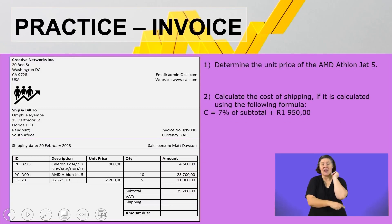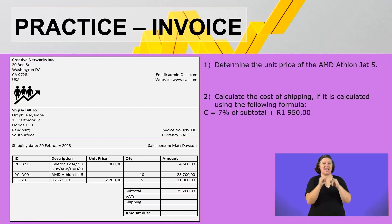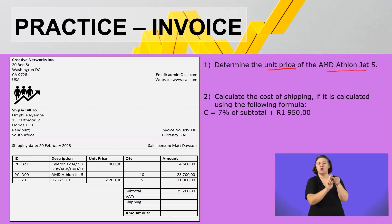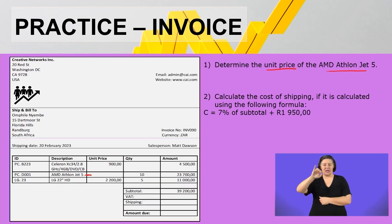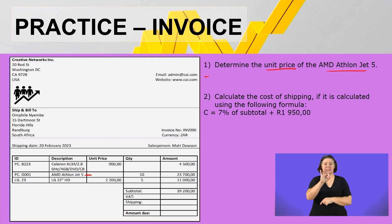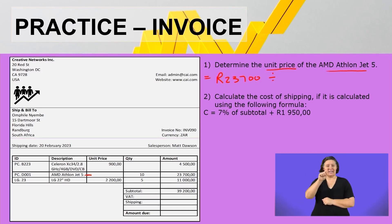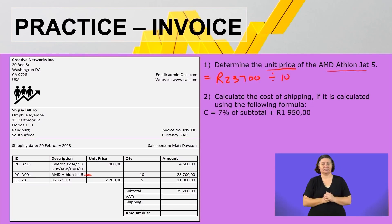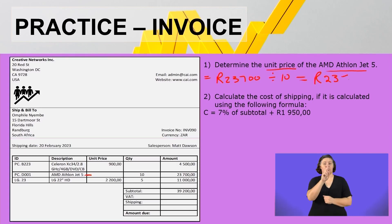Let's quickly look at the practice of invoices. Question number one: determine the unit price of the AMD Athlon Jet 5. Unit means one. The quantity is 10 and the amount is 23,700. So we simply say 23,700 divided by 10 equals a unit price of 2,370 rand.